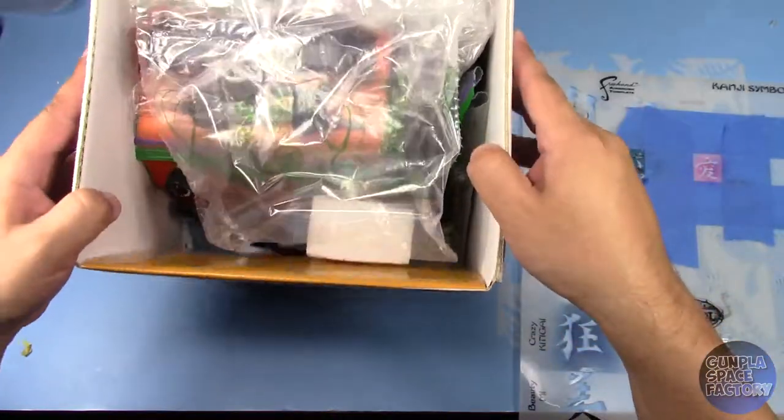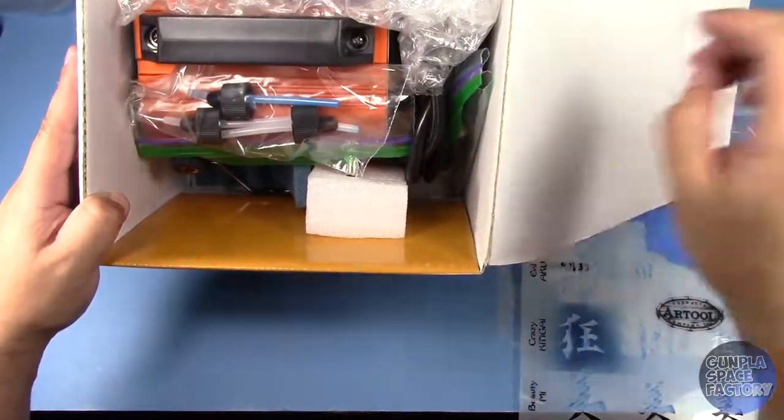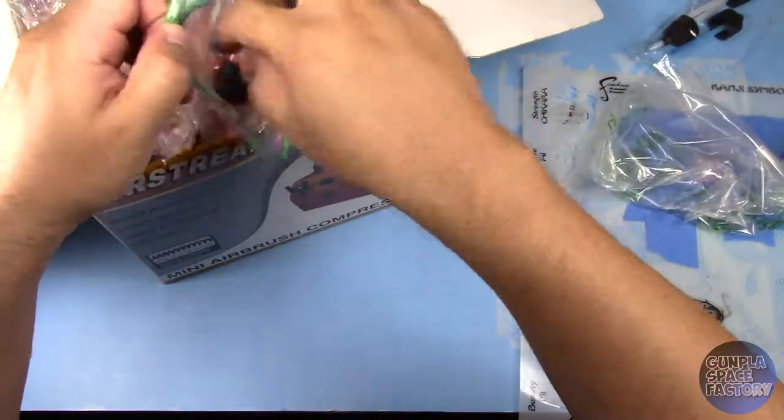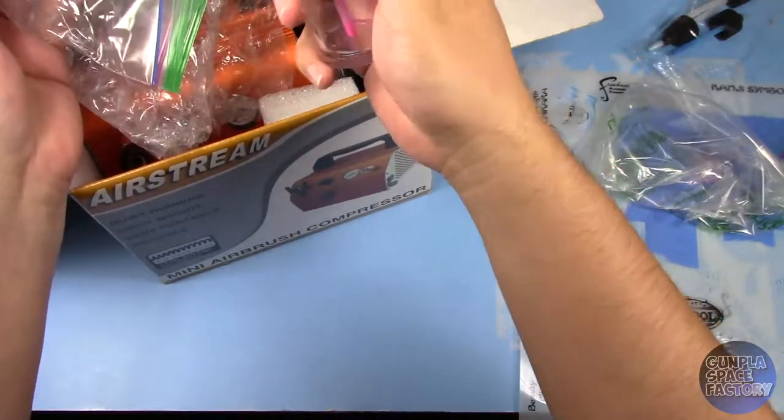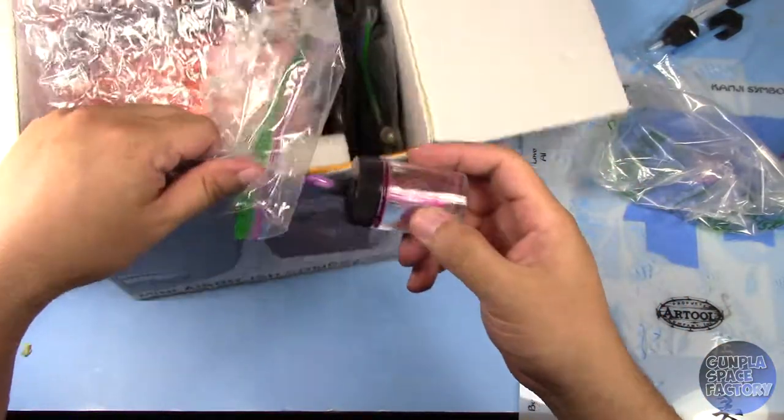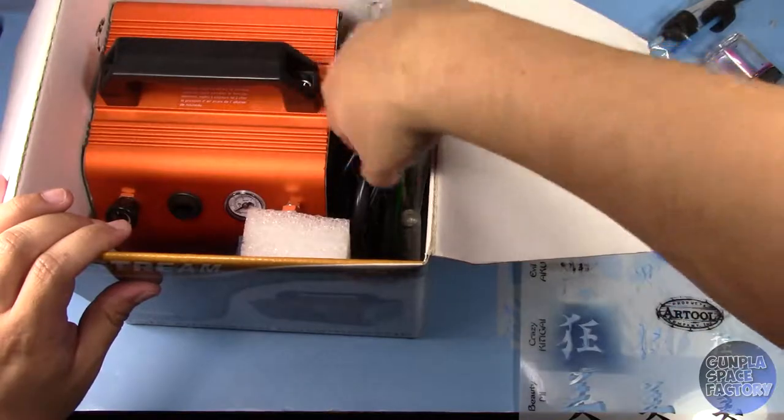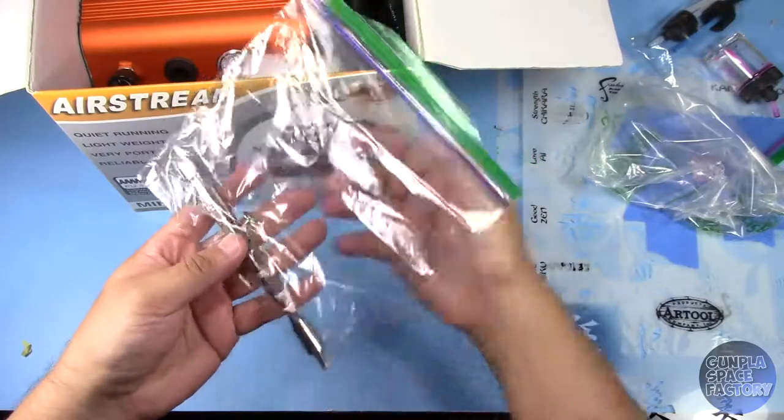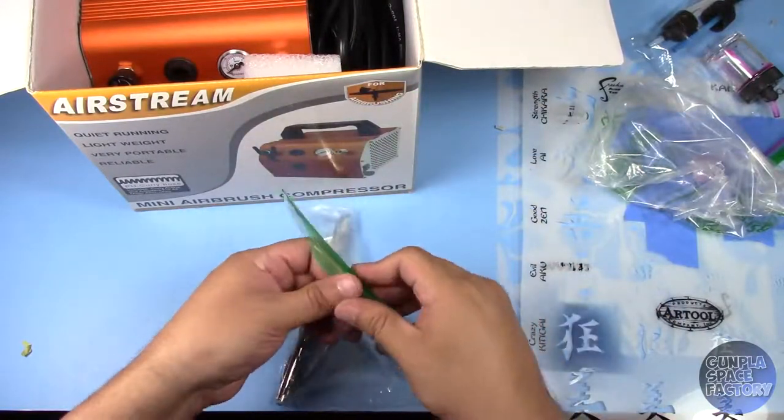The seller threw in accessories that were not included in the original ad like these bottle adapters for the airbrush. And here is the Badger 155 Anthem. It appears to be in very good condition. It actually looks nearly new at first glance.